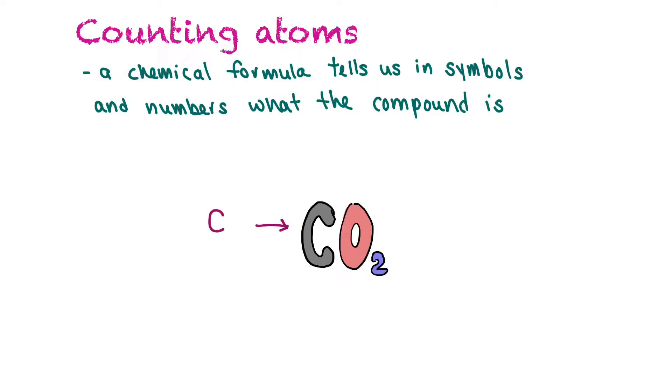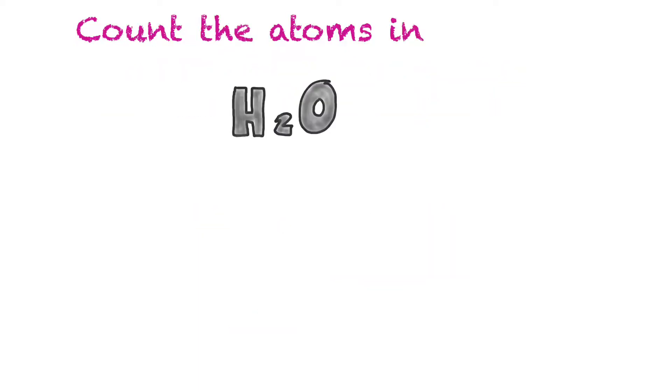In this example we have CO2. We have carbon and we have oxygen. If you look at the numbers beside, you can know how many atoms of that type are in the molecule. There's a two there, so that means we have two oxygens. There's no number here, so whenever there's no number we assume there's one. CO2 means there's one carbon and two oxygen, so if we add those together there's three total atoms in this molecule.